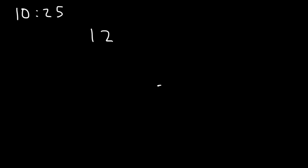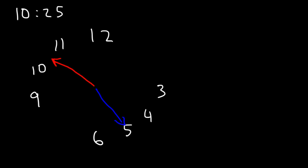Here's the last example. Find the shortest angle for the time of 10:25 — so find the shortest angle between the hour hand and the minute hand when the clock says 10:25. This is going to be 12, 3, 6, and 9. So 25 corresponds to 5 — that's where the minute hand is going to be located. Now the hour hand is between 10 and 11, very close to the middle, but slightly closer to 10.